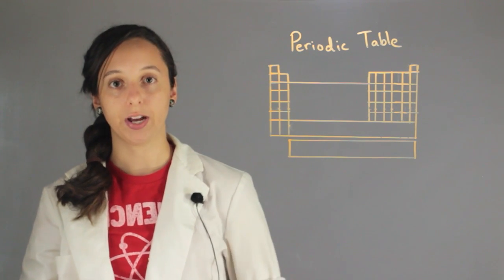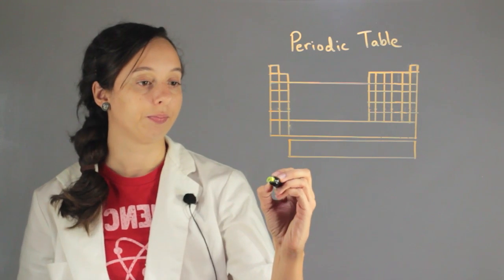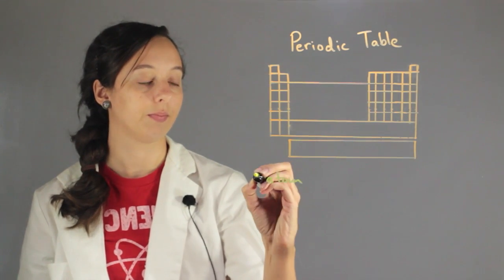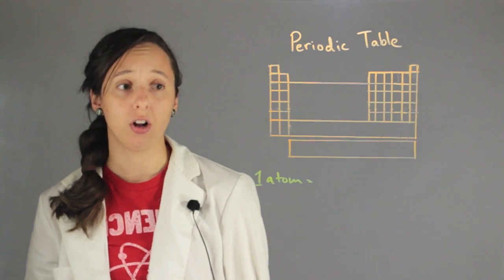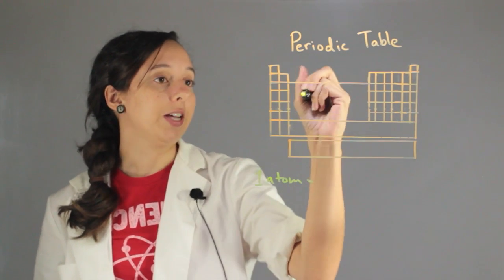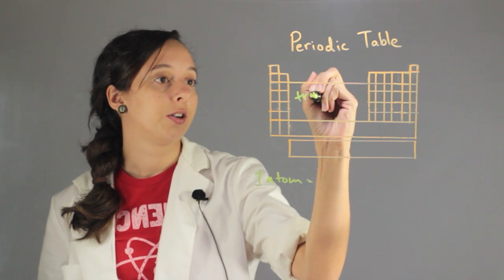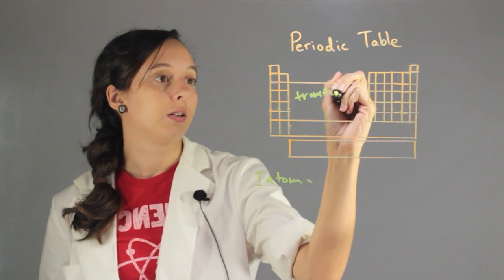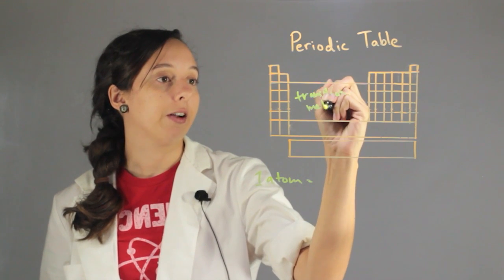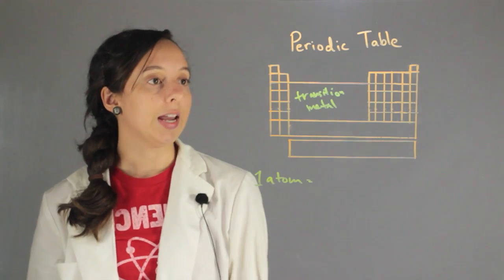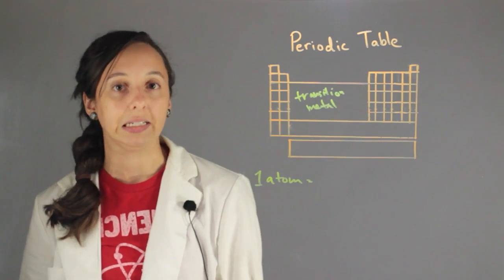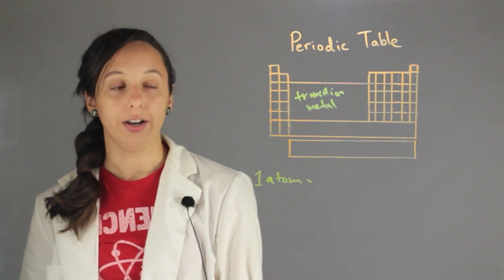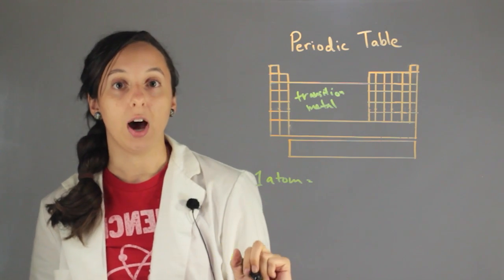So one type is that it's just one atom and it's not a transition metal. So right here in the middle this is our transition metal area and this is the section of the periodic table where you can't immediately identify ion charge. So let's assume that our first atom is not.